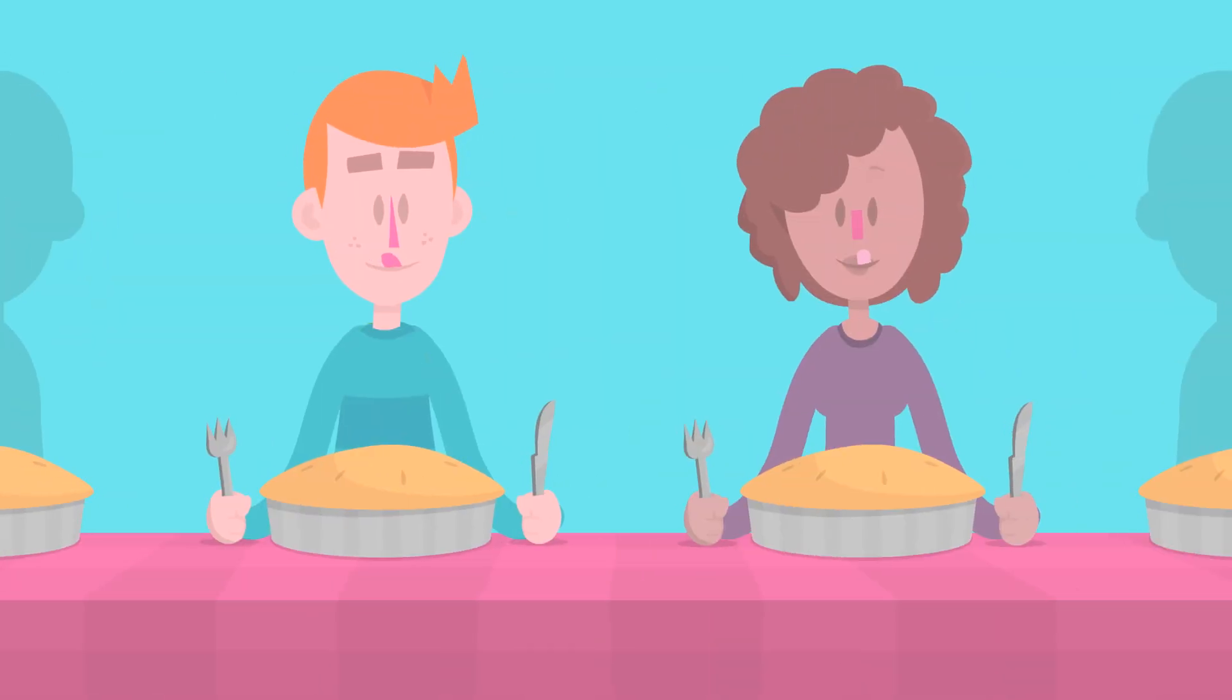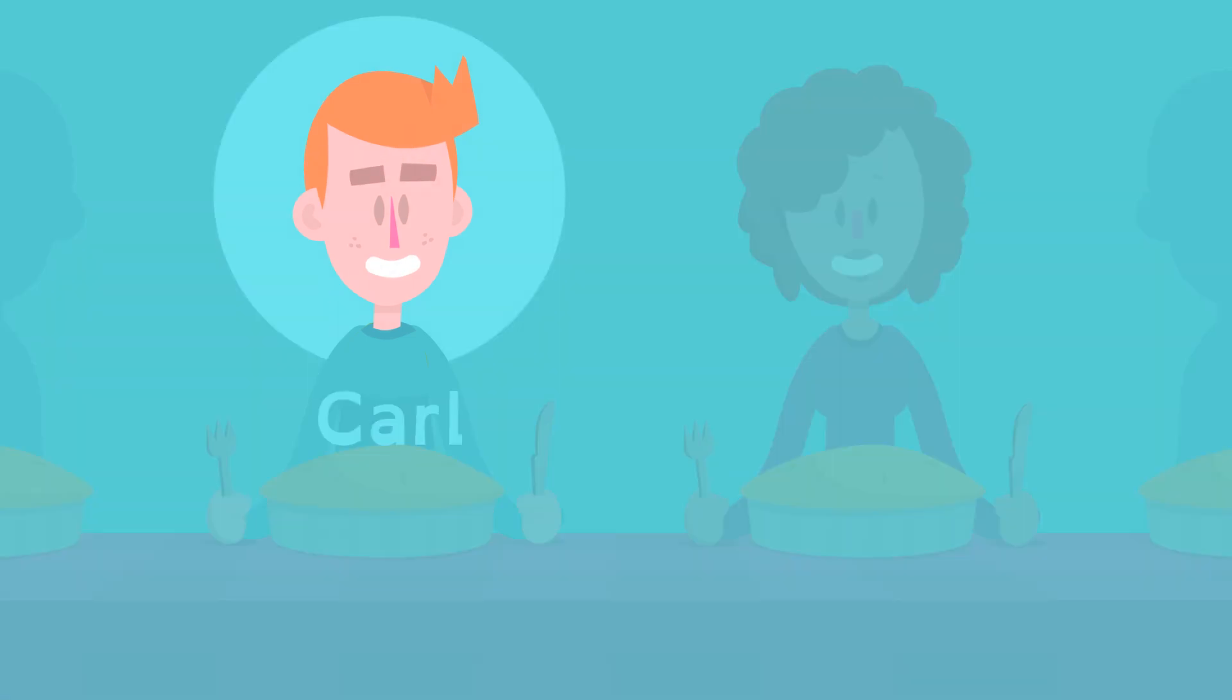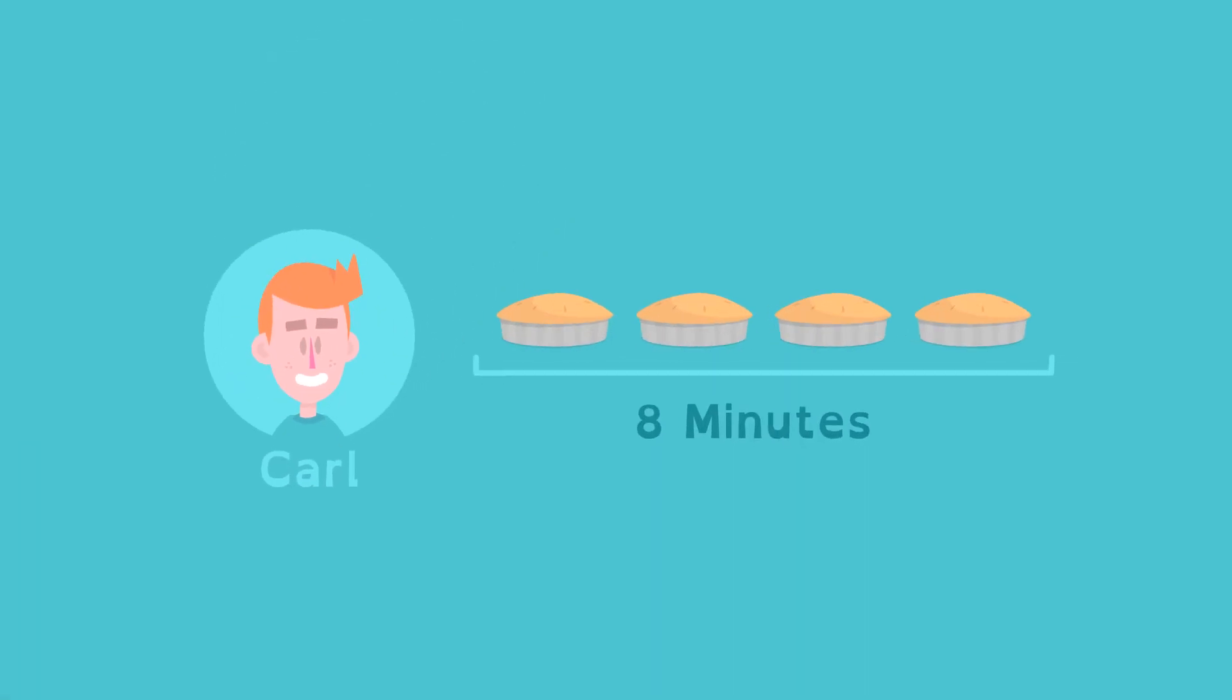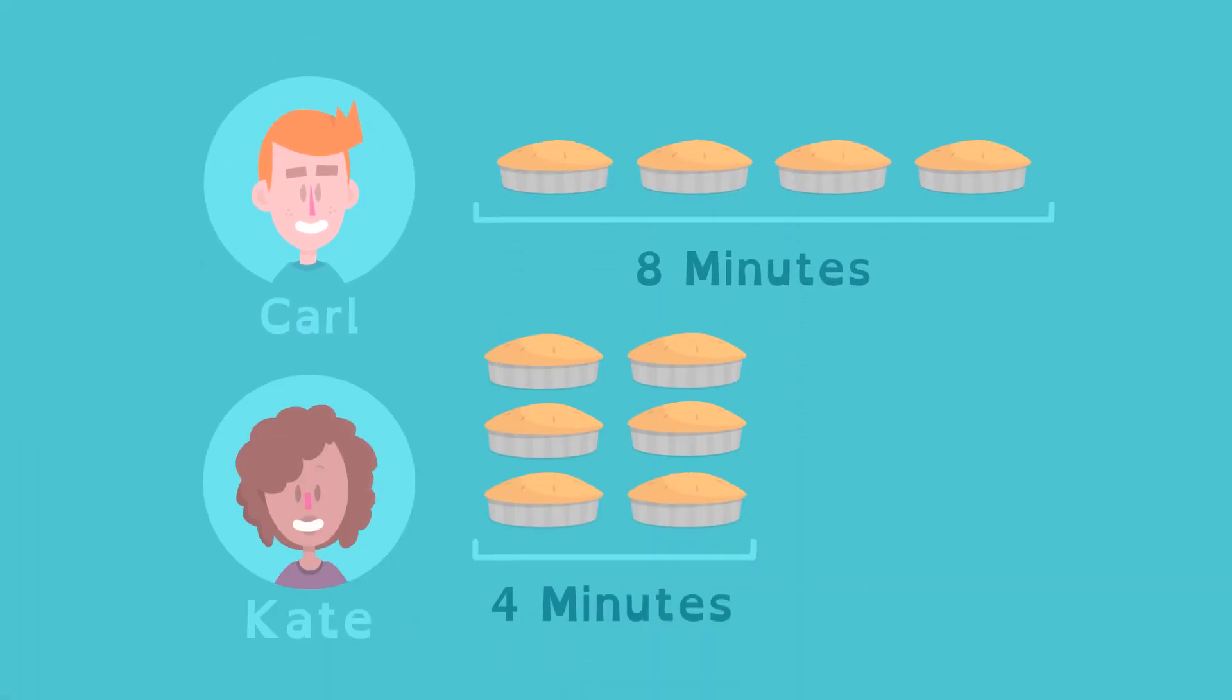Kate and Carl have entered a pie-eating contest. Carl can eat four pies in eight minutes. Kate can eat six pies in four minutes.